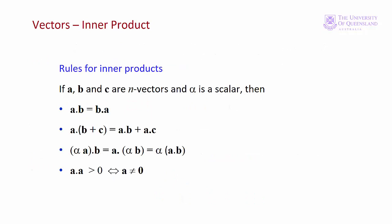If A, B and C are n vectors and alpha is a scalar, then we have the following. Dot products of two vectors have the commutative property, they also have the distributive property.